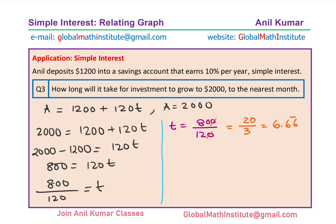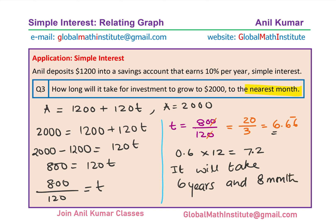Now we need to provide the answer to the nearest month. We know it is 6 years and 0.6 recurring of a year. So 0.6 recurring years means how many months — multiply by 12. 0.6 recurring times 12 gives 7.2, so approximately 8 months. So slightly more than 7 months, and therefore we can say it will take 6 years and 8 months for the amount to be $2000.